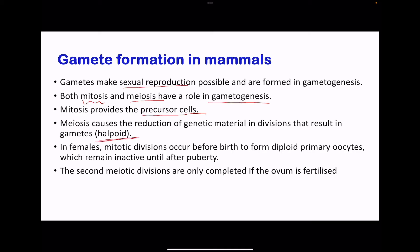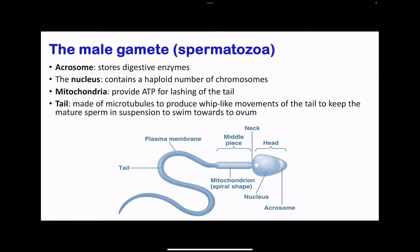In females, mitotic division occurs before birth to form the diploid primary oocyte, which remains inactive until puberty. When puberty is reached, meiosis continues to produce the secondary oocyte, and this secondary oocyte completes meiotic division when the head of the sperm touches the membrane of the secondary oocyte. The male gametes, the spermatozoa, contain an acrosome with digestive enzymes, a haploid nucleus, mitochondria in the middle piece providing ATP energy for the lashing of the tail, and a tail made up of microtubules that produce whip-like movements to ensure the sperm moves towards the ovum.